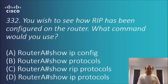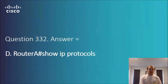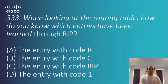Question 3.32: you wish to see how RIP has been configured on the router. What command would you use? The options are: show IP config, show protocol, show RIP protocols, or show IP protocols. The answer is D — show IP protocols. That's the command to get the configuration information required.